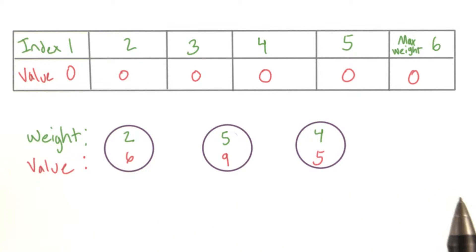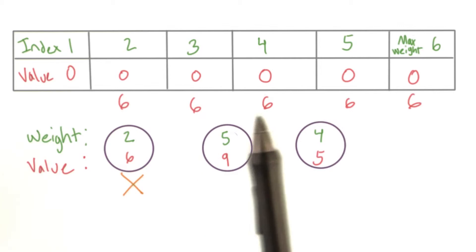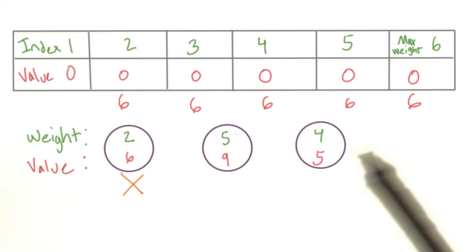These are our objects that we're trying to fit in a knapsack with a weight limit of 6. We take out the object with a weight of 2. We can update the value at index 2 to the value of the object. Then we'll update everything after it as well with the same value. Even if our knapsack can hold 6, we've only seen one object so far, so we need to base that best value off one object.